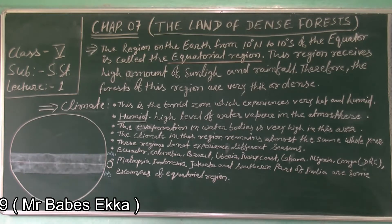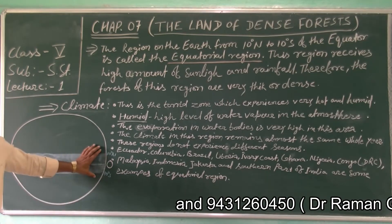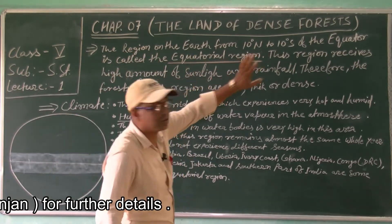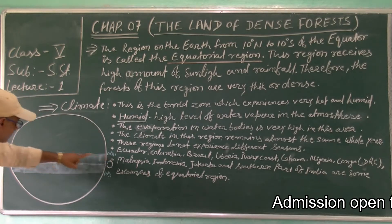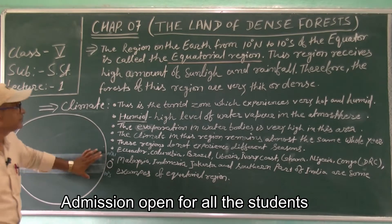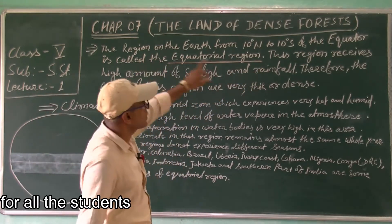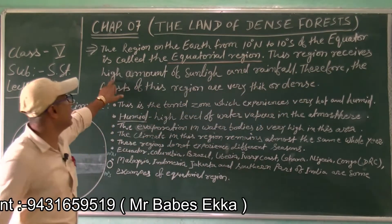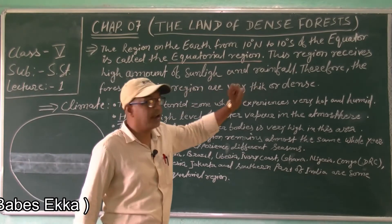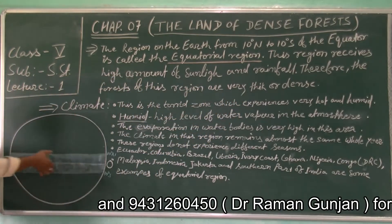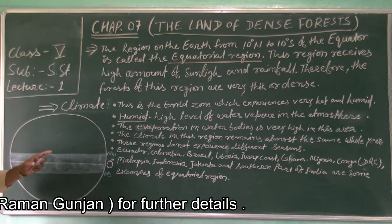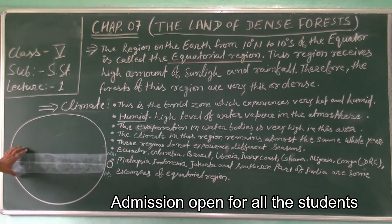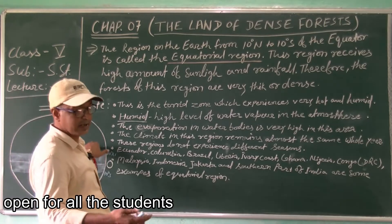So the region on the earth from 10 degree north to 10 degree south of the equator is called the equatorial region. This region receives a high amount of sunlight and rainfall throughout the year.